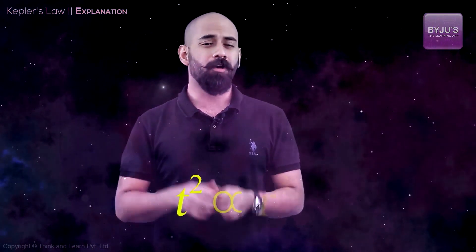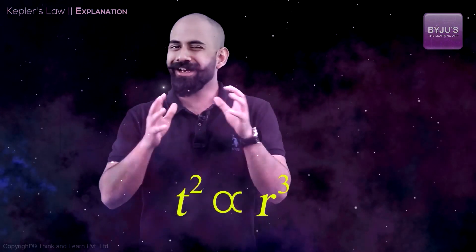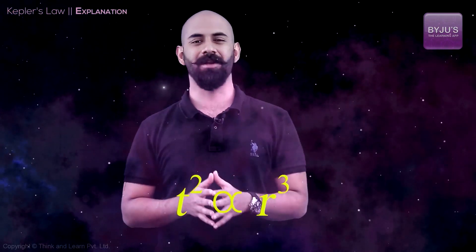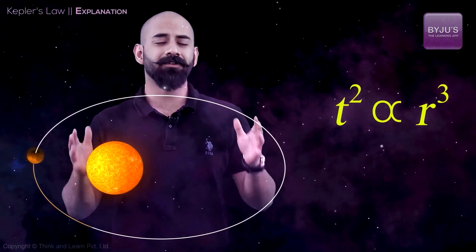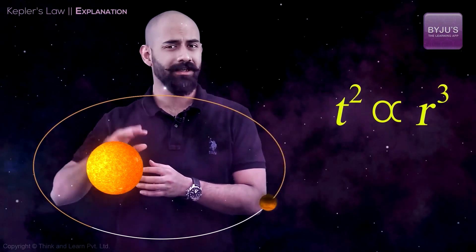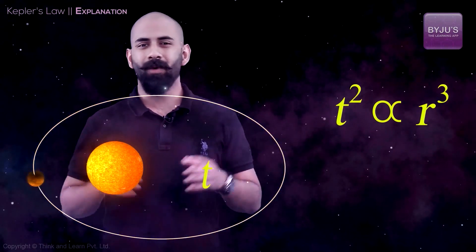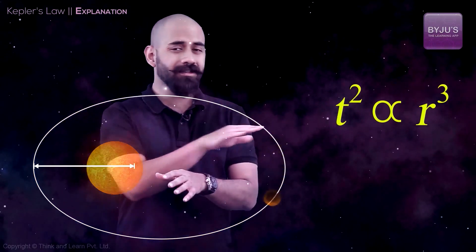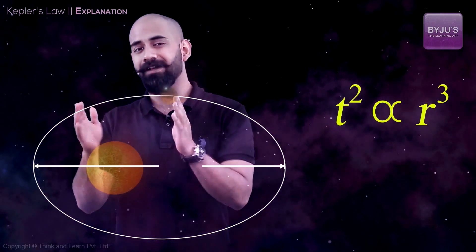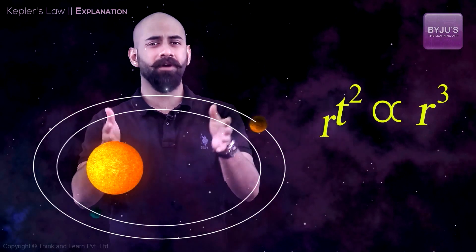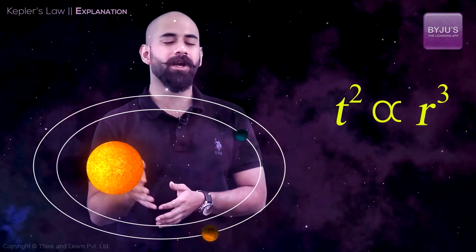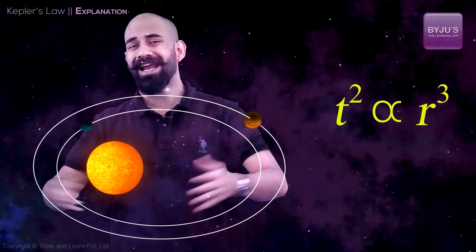The third law says that the square of the time periods of any two planets is always proportional to the cube of their semi-major axis. If a planet is going around in an orbit, the time period T is the time taken to complete one full revolution. The semi-major axis R is half the length of the largest diameter of the elliptical orbit. What Kepler found was that T squared is always proportional to R cubed for any pair of planets.